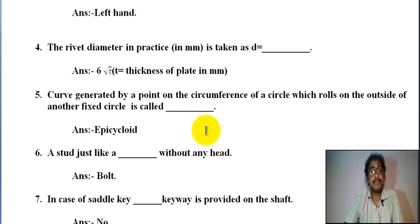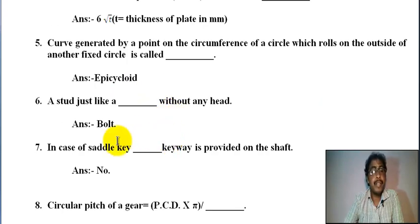Number five: curve generated by a point on the circumference of a circle which rolls on the outside of another fixed circle is called epicycloid. A circle rotates on another outer circle, point on the circumference which rolls on the outside of another fixed circle is called epicycloid. For inner side it is called hypocycloid.